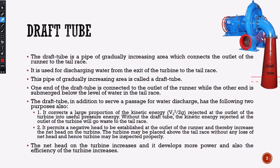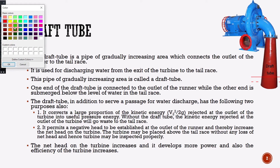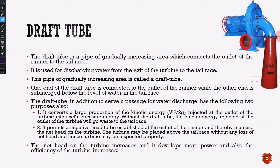If you look at the draft tube, here is a particular turbine case. Here is the turbine output. The diameter is increasing. So this is our draft tube. This is the area above the tube, and this area above the tube has pressure less than atmospheric.